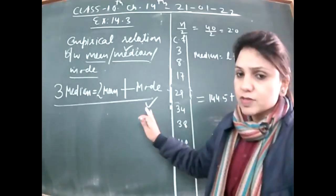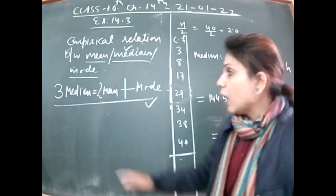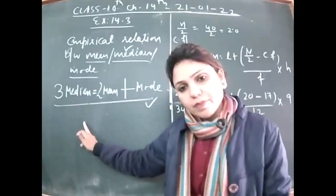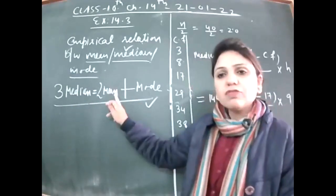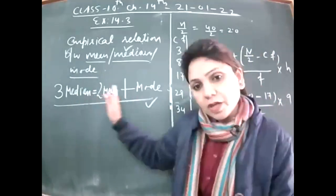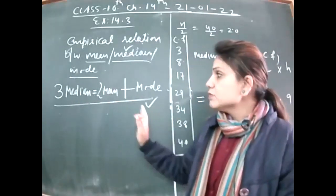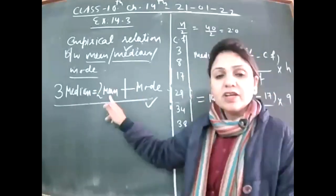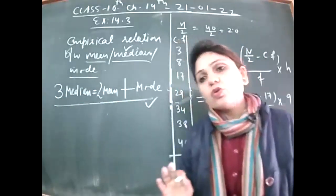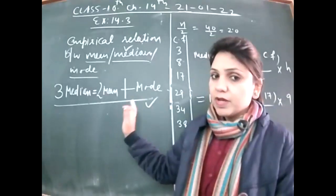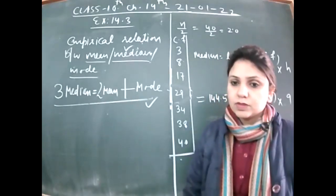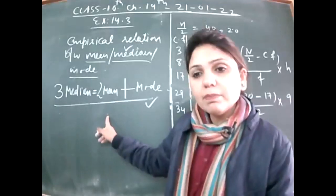The application of this formula: sometimes you are given the median and the mean and need to find the mode. Sometimes mean and mode are given and you need to find median. Sometimes mean and median are given and you want to find mode. Simply substitute the known values into the formula 3 × Median = 2 × Mean + Mode and solve for the unknown.